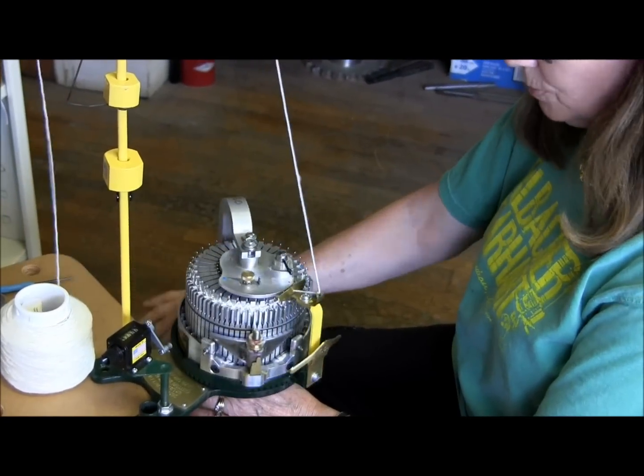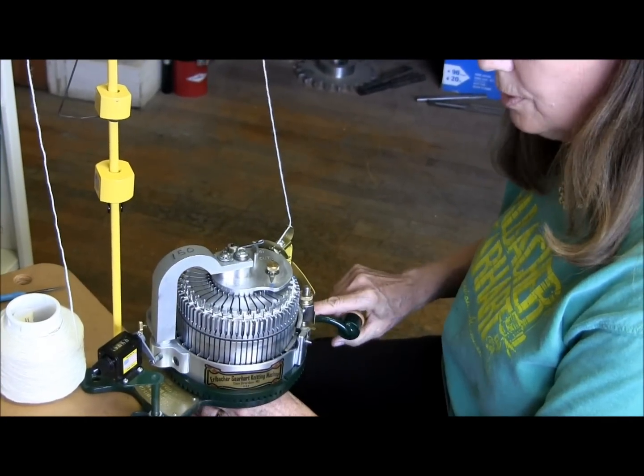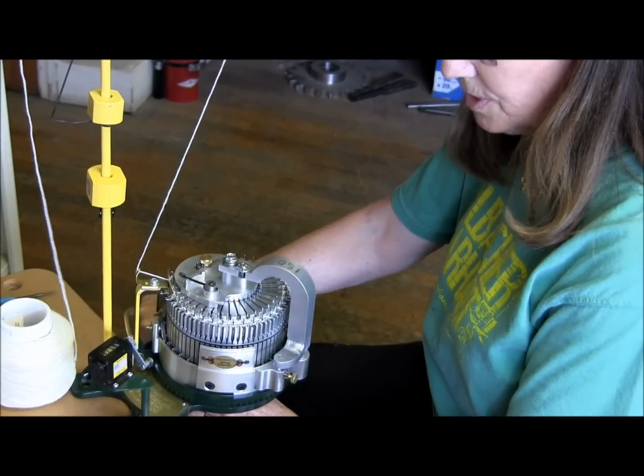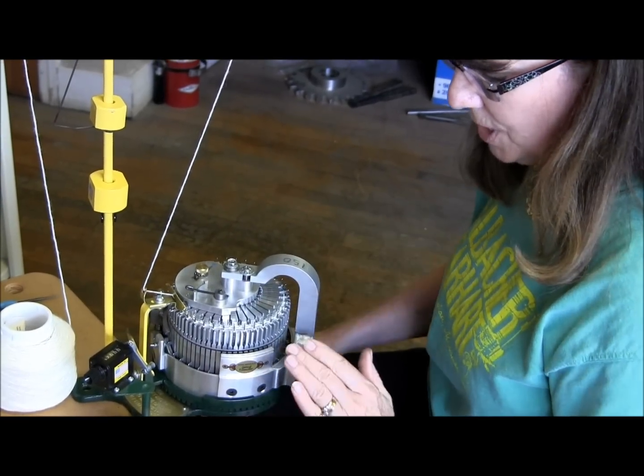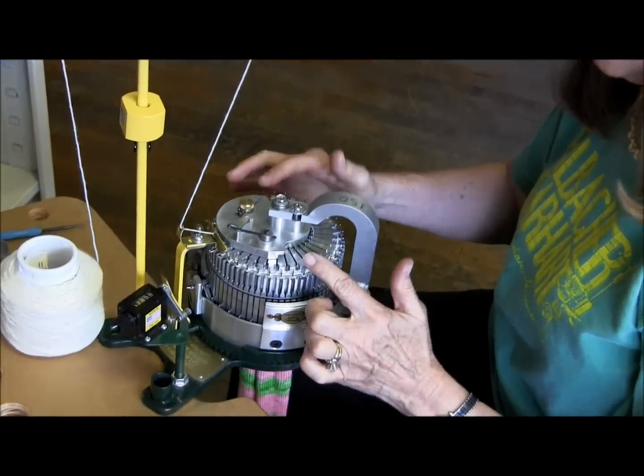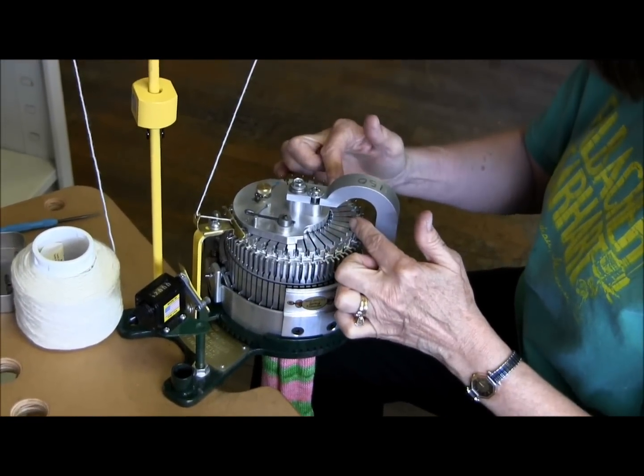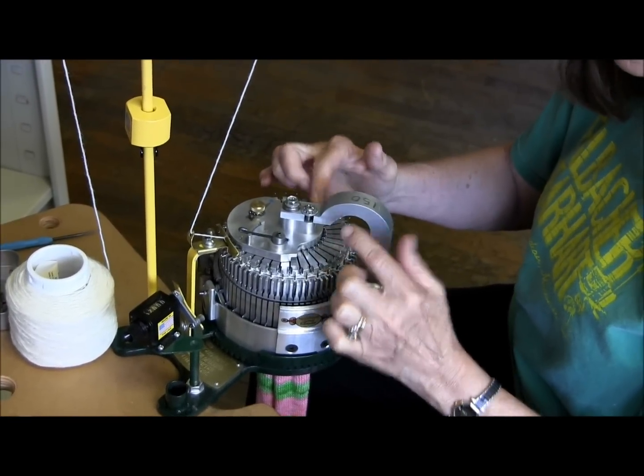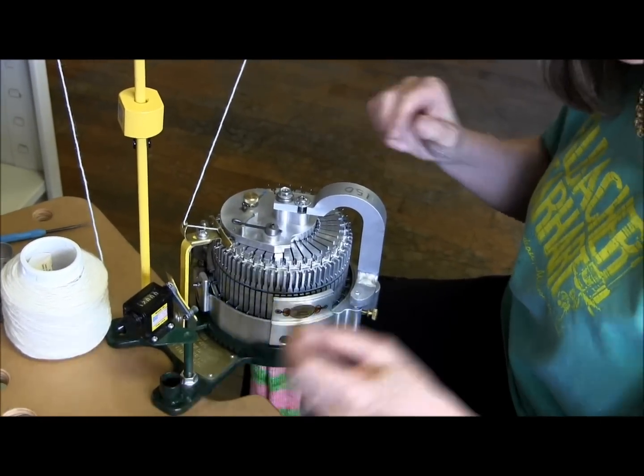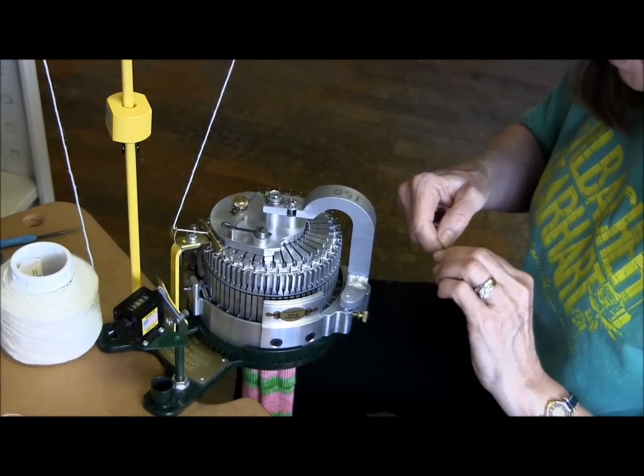Once I've hit my 80 or 90 rows, I want to stop the yarn carrier at the 1 o'clock position. From here, I'm going to take out the front half of the ribber needles and put in all cylinder needles so I can start on my pre-heel.